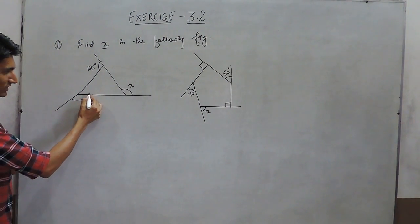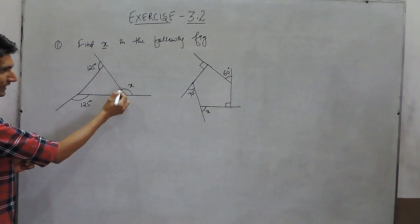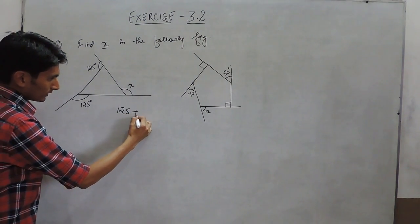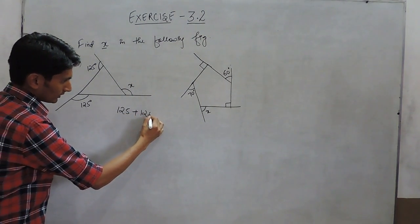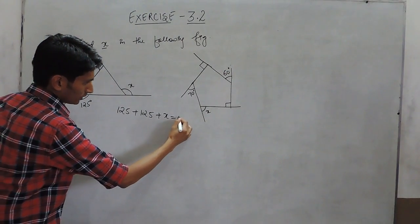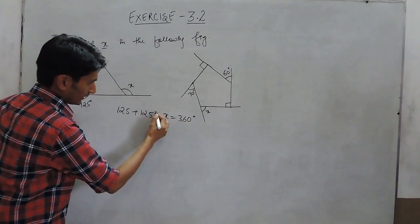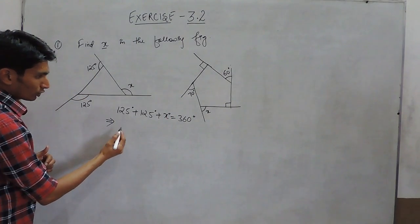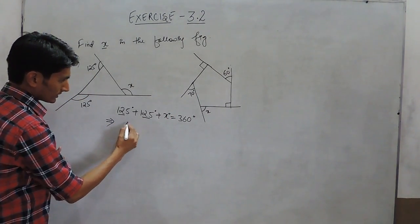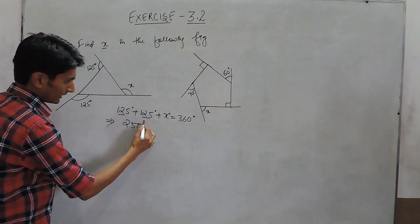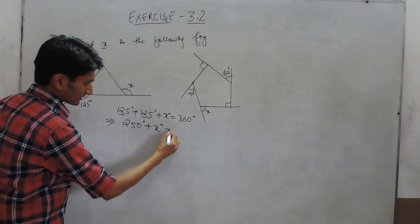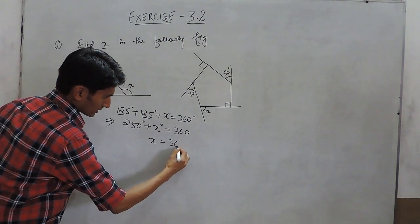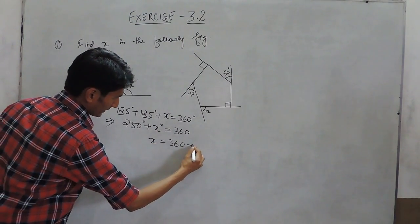So we know that this exterior angle plus this exterior angle plus this exterior angle must be equal to 360 degrees. We can solve this equation: 250 degrees plus x equals 360 degrees.